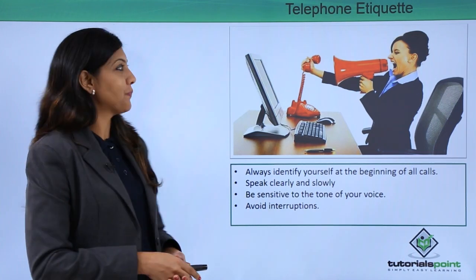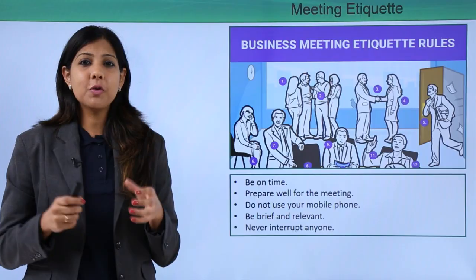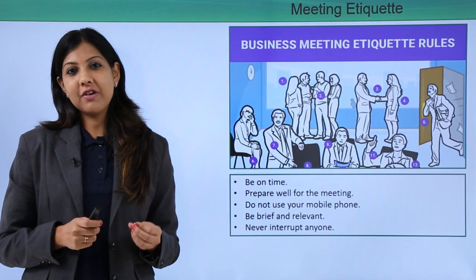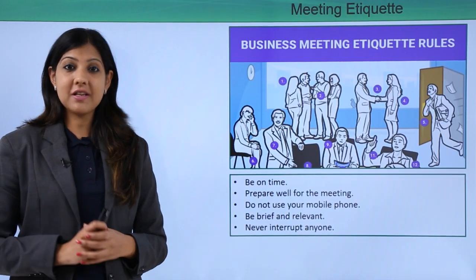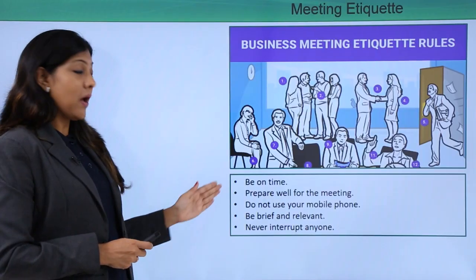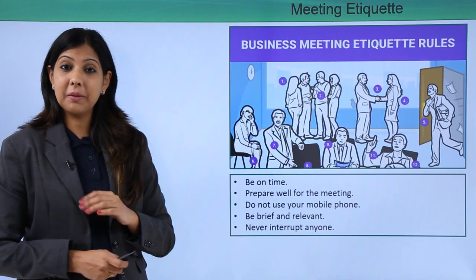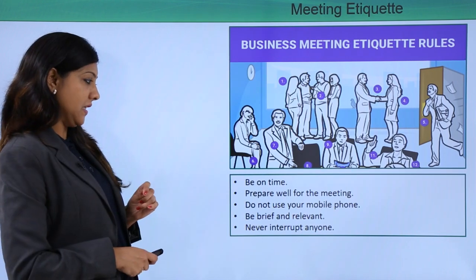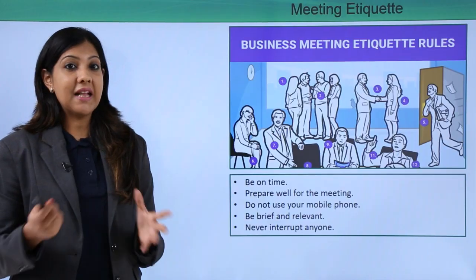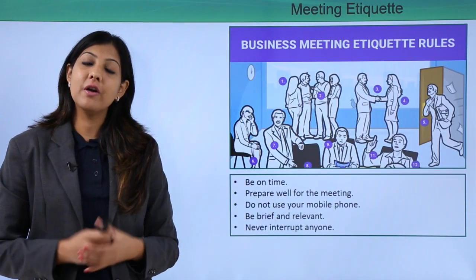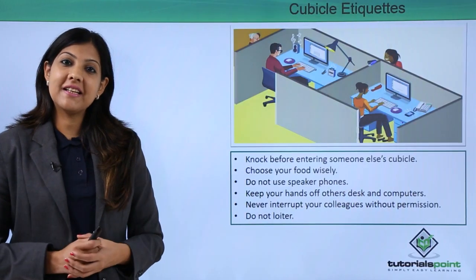Certain meeting etiquette is very essential, because whenever you go for a meeting you do not want to leave a bad impression. You need to be on time, prepare well, and know what the agenda of the meeting is. Do not use your mobile phones — it creates a completely wrong impression. Be brief and relevant, and never interrupt anyone. If a host or someone else is talking, please listen to them properly before putting in your comments. It is very rude to interrupt somebody.